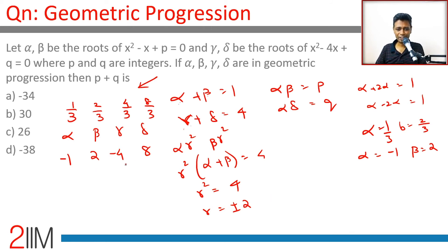These are the values. Alpha into beta is P, P is minus 2. Gamma into delta is Q, Q is minus 32. Then P plus Q, minus 2 plus minus 32, is minus 34. Done.